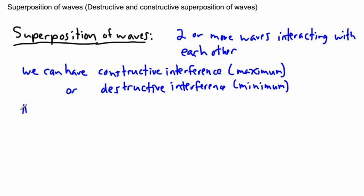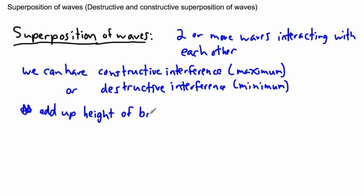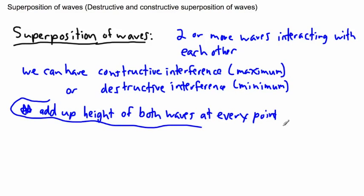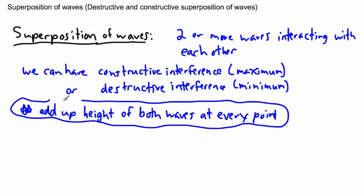So the trick when you're looking at superposition of waves is just to add up the height of both waves at every point. That's really how simple it is. That's all you have to do when you're actually manually doing superposition of waves.